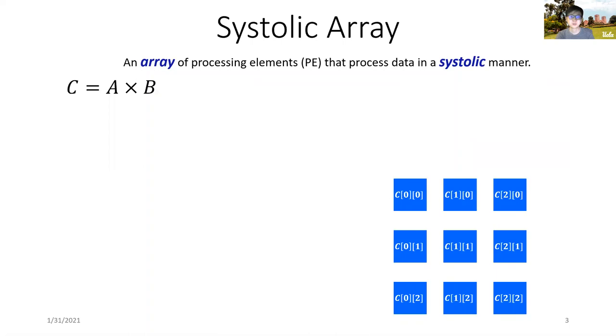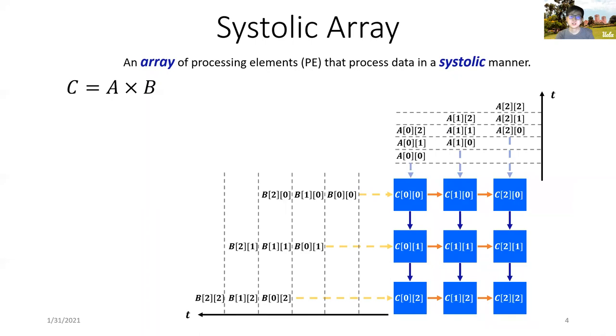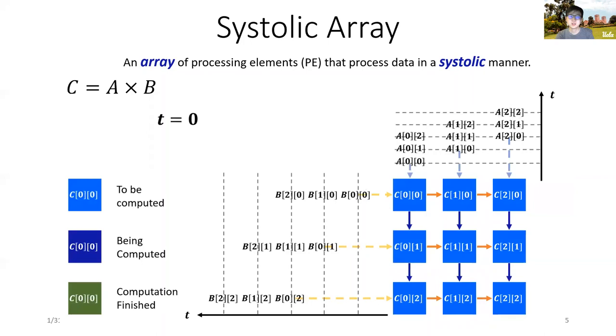Let's now take a closer look at this architecture systolic array. The figure in the middle shows a two-dimensional systolic array for matrix multiplication. Each PE computes one element of the matrix C.